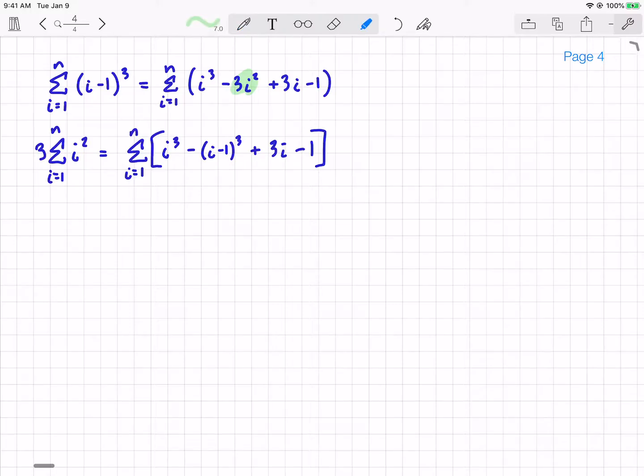I'm going to have the i cubed minus (i-1) cubed plus 3i minus 1. That's just algebra, getting things to the correct side. And what you're going to notice is I'm going to do the same strategy with this. I'm actually going to write out the first few terms to see what happens with that. So my left side is going to stay the same. I'm going to have 1 cubed minus 0 cubed plus 2 cubed minus 1 cubed plus dot dot dot plus n cubed minus (n-1) cubed. And what you're going to notice, 0 cubed is boring, it's 0. The 1 cubed cancels with this. The 2 cubed ultimately cancels with this.